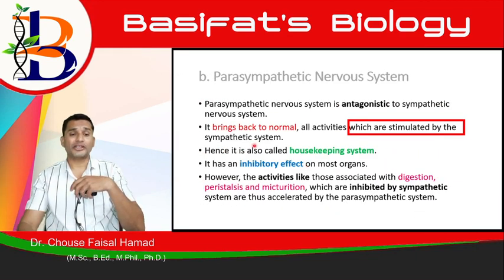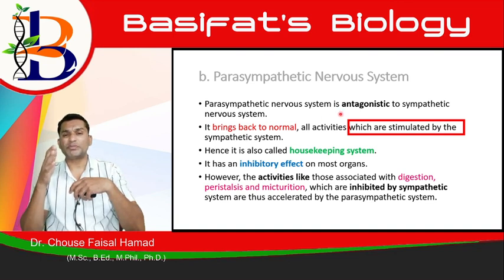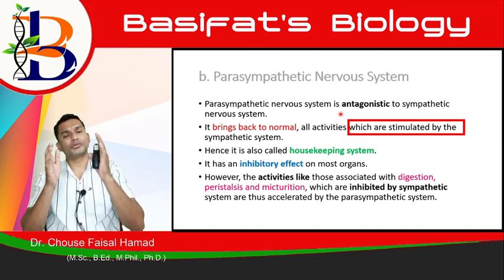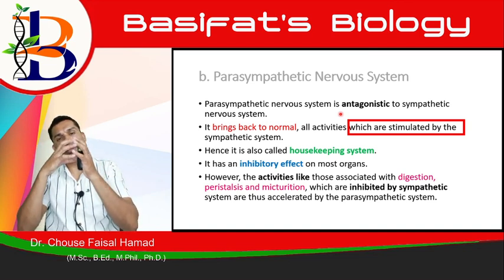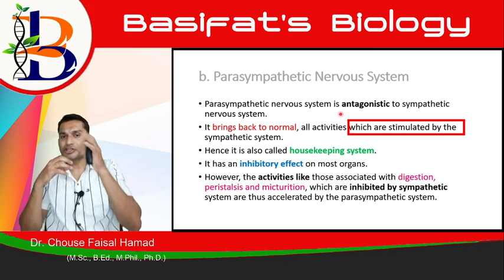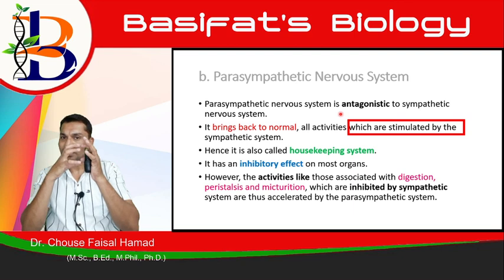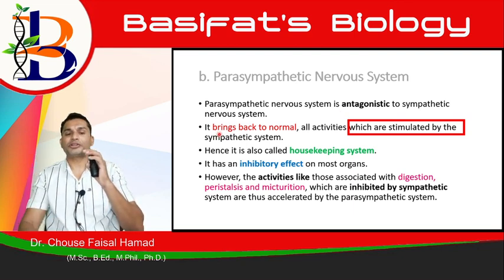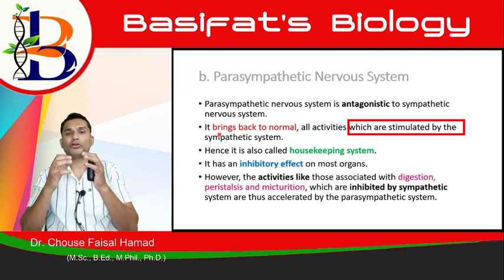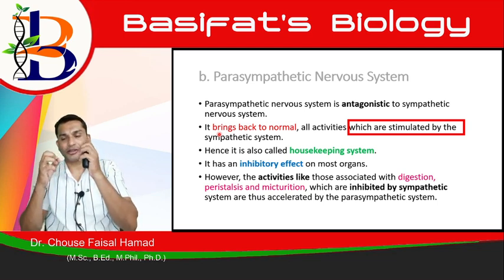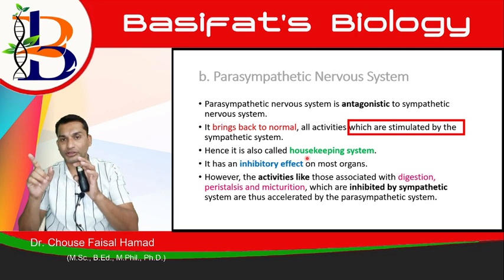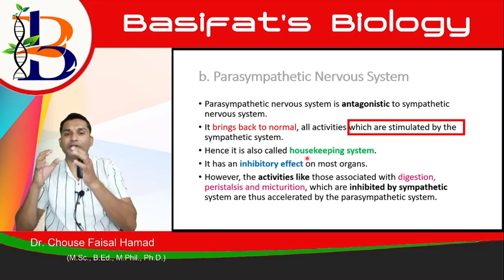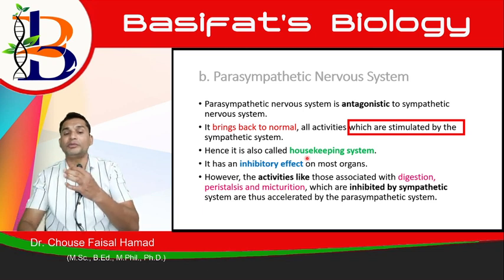The parasympathetic nervous system works completely against the sympathetic nervous system — they are antagonistic. Where the sympathetic activates and speeds up an organ during stress, the parasympathetic comes in and slows it down, relaxes it, and brings the organ back to its normal condition. This is why the parasympathetic system is called the housekeeping system.